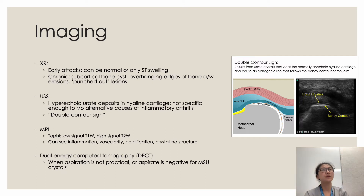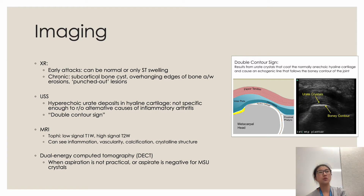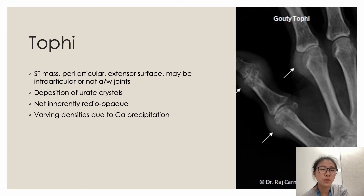Various imaging modalities can be used: X-ray, ultrasound, MRI, or dual-energy CT. Ultrasound demonstrates a double contour sign — accumulation of crystals over the hyaline cartilage creates an additional line above the bony contour. Dual-energy CT is used when aspiration is not practical, such as when there is very low effusion, a very deep joint, or when clinical suspicion is high but the aspirate is negative for crystals.